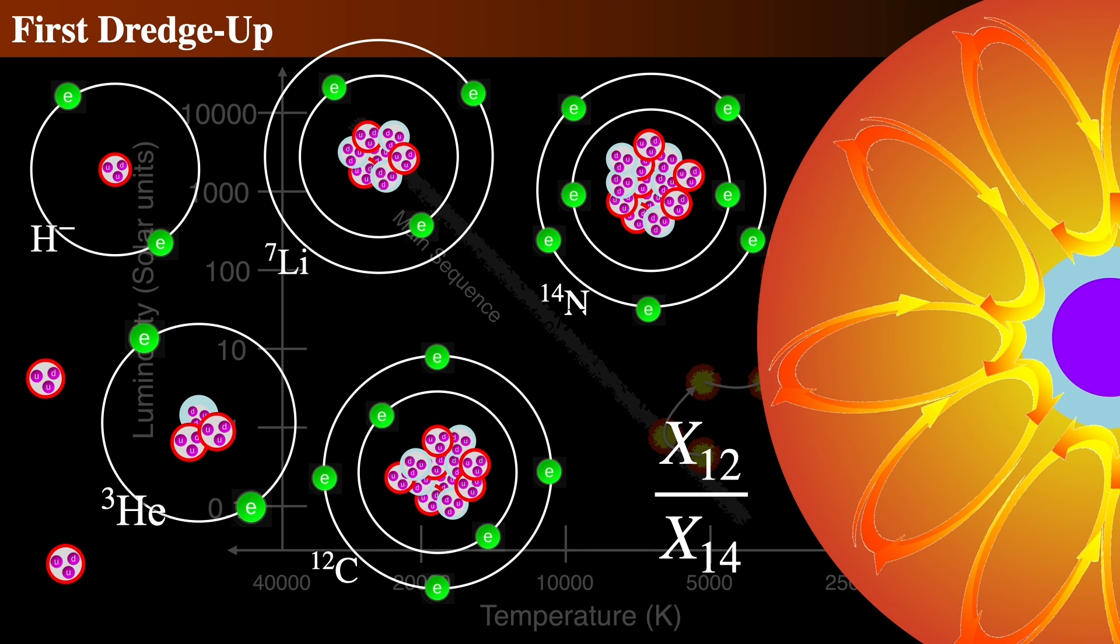More massive stars might skip this dredge-up entirely, doing other dredge-ups, which we'll cover later. What's amazing is that nature provides us with this means of directly observing the products of nuclear reactions deep within stellar interiors, and it is these observable changes in the surface composition that provide important tests of the predictions of stellar evolution theory.